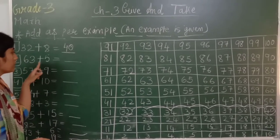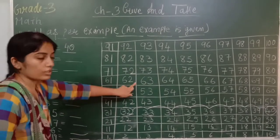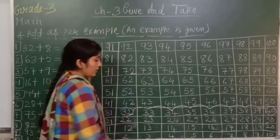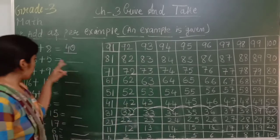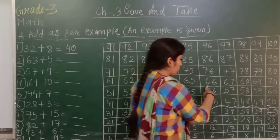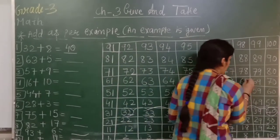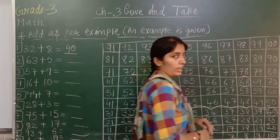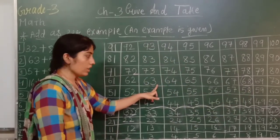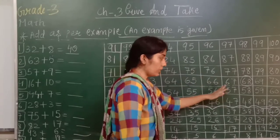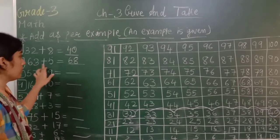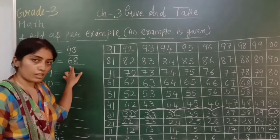Now next example: 63 plus 5. Where is 63? 63 yaha pae. Humko 63 pe khaade rehna hai, uske baad kitne steps chalna hai? 5. One, two, three, four, five. Toh answer is 68. Means hum 63 pe khaade hai, next 5 steps hum ne jump kiya, toh hamara answer kya hai? 68. That means agar hum 63 plus 5 karenge, toh answer will be 68.